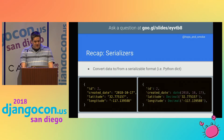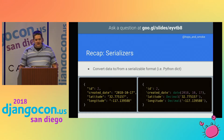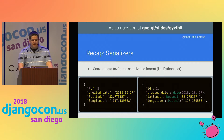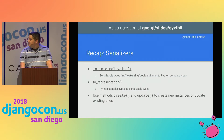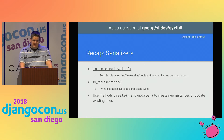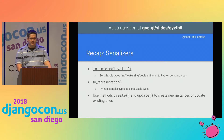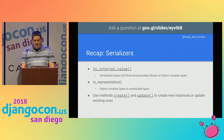This is the result from the validated_data property of the serializer. The serializer has converted the date into a datetime.date object and the two decimal strings into Python decimal objects. Then serializers use either the create or update methods to save those fields into the database using your Django models. to_internal_value takes serializable types — like numbers and strings — and turns them into Python types like datetimes and decimals. to_representation does the same thing only in reverse. Typically you won't have to modify create and update unless you're modifying multiple models in the same serializer, which I'll demonstrate a little bit later.